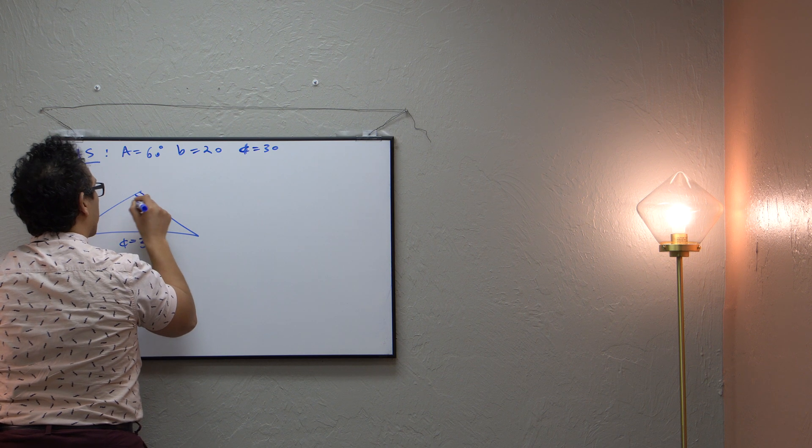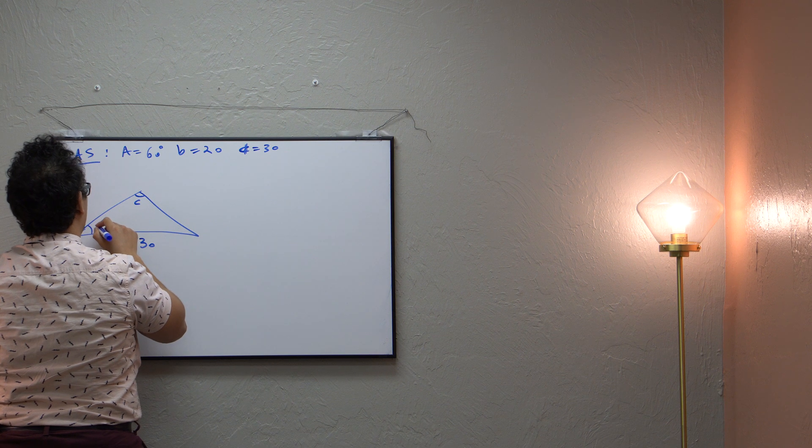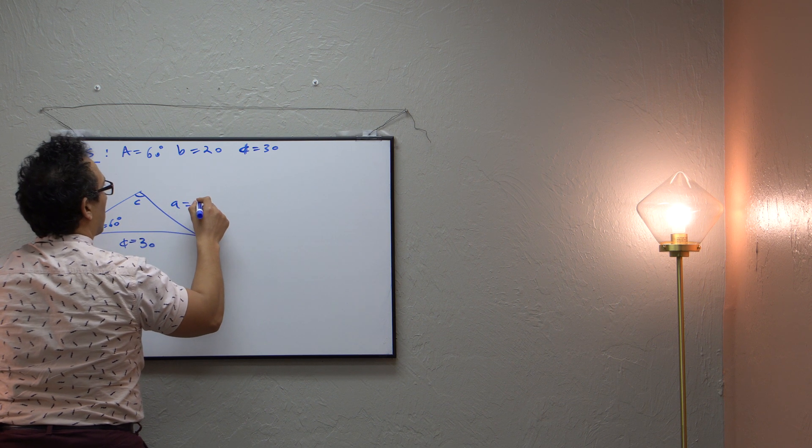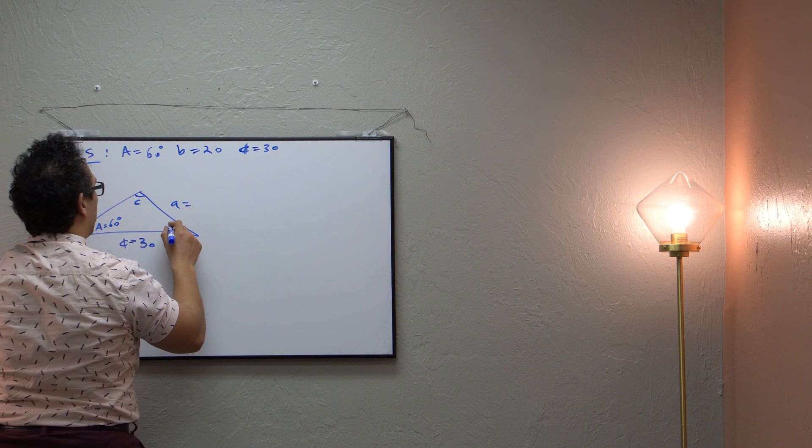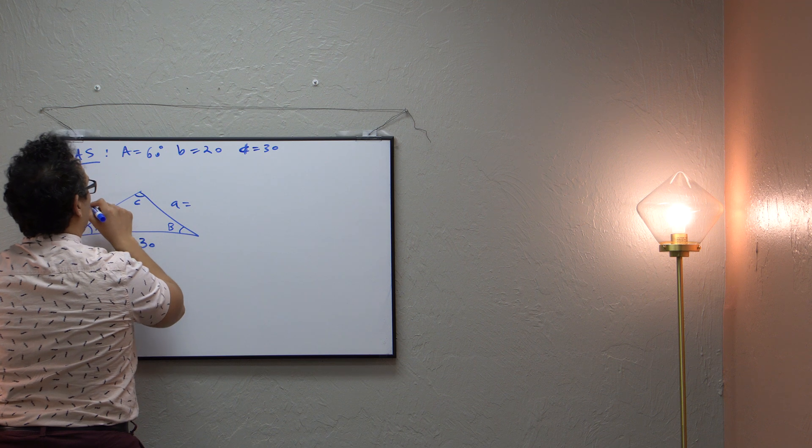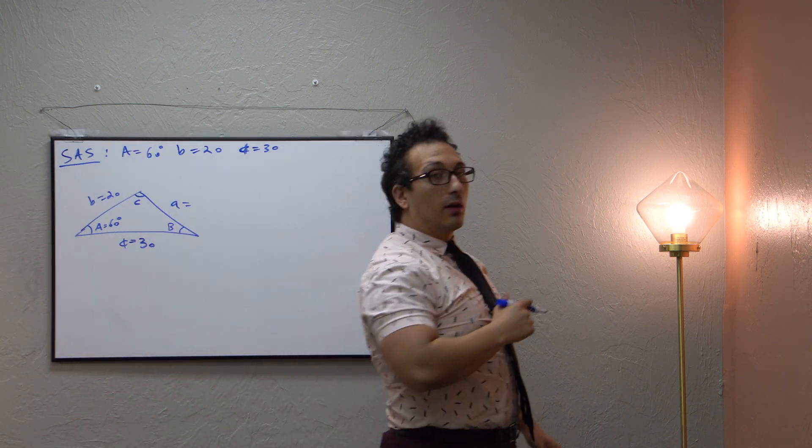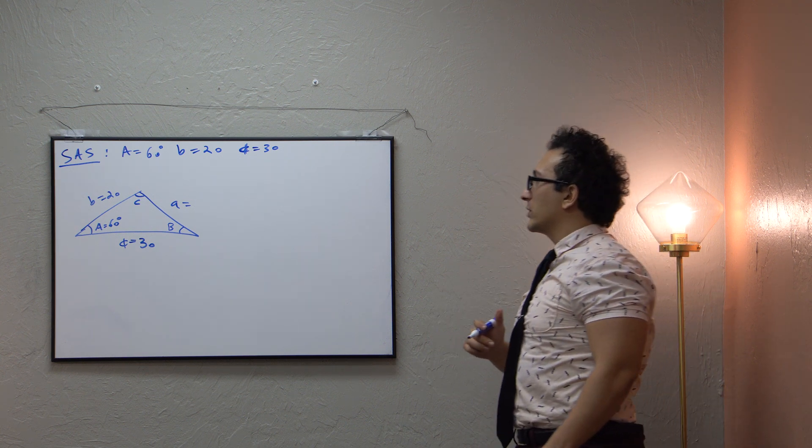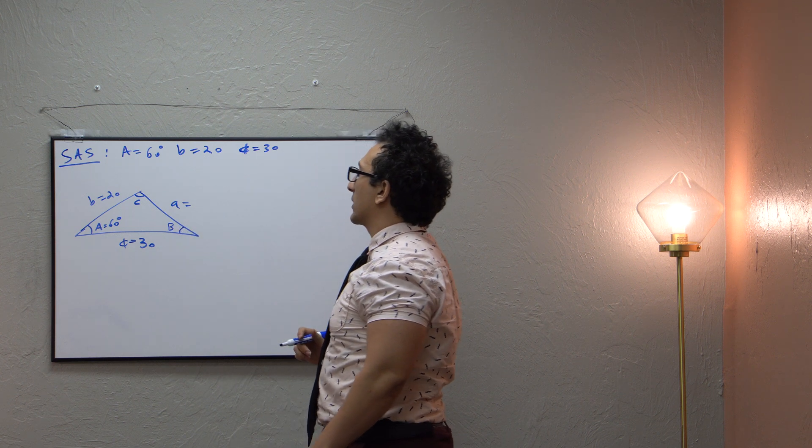30, that means this is capital C. We don't know it yet. Let's call this capital A, equaling 60 degrees. So this makes this little a, which is unknown. And let's make this capital B. We don't know it yet, making this little b 20. We will utilize the law of cosines to solve this triangle for the unknown angles here, here, and the unknown side length here.